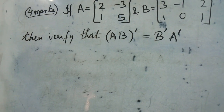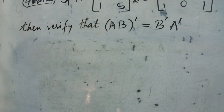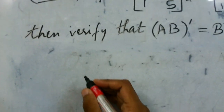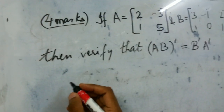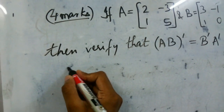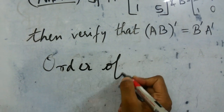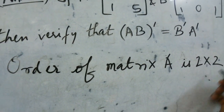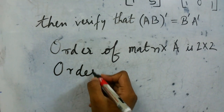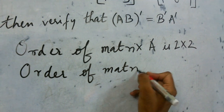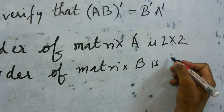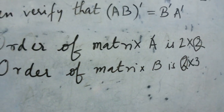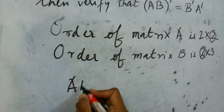First we have to compute the left hand side, which means finding AB transpose. But before finding AB transpose, we need to find A into B. So first we need to check the order. The order of matrix A is 2 by 2 and the order of matrix B is 2 by 3. Since the inner dimensions match, we can proceed with the multiplication.